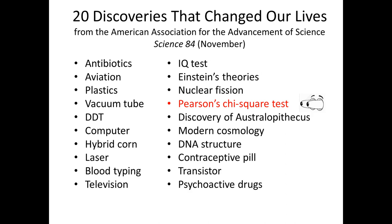What is Pearson's Chi-Square Test, this humble statistical test, doing on this list of scientific discoveries that changed our lives? The rationale is that prior to 1900, when Pearson published this test, scientists didn't have any standard method for assessing how well their data matched their theory. But Pearson's statistic opened the door, and it led to sweeping changes in the way scientists analyzed their data. With Pearson's test, hypotheses could be tested objectively and evidence could be quantified.